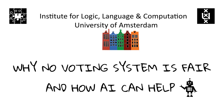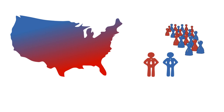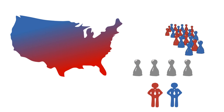Why no voting system is fair and how artificial intelligence can help. In November 2020, the United States of America will elect a new president. Citizens in the 50 US states will head to the polling stations and vote for the electors of their state. The candidate winning most of the votes by the 538 electors becomes the new US president.